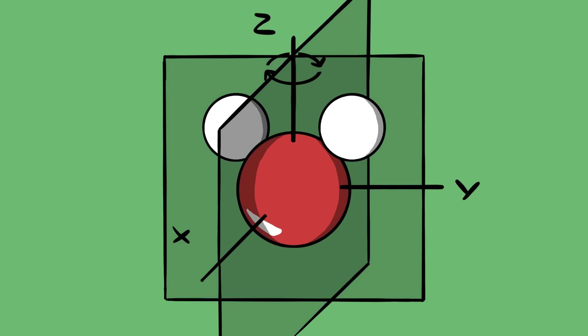You can prove to yourself that this meets the group axioms. Chemists call this the C2V point group, in case you were curious.